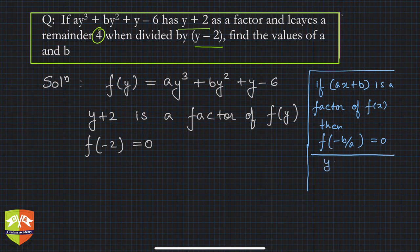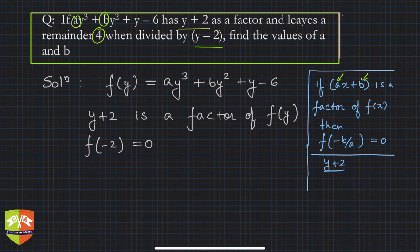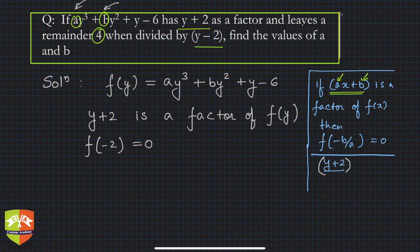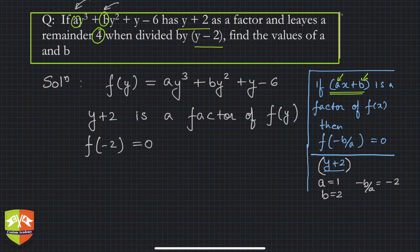Now, don't get confused — the a and b in the general factor theorem statement are different from the a and b we need to find in this question. In our case, the factor is (y + 2), so the coefficient of the variable is 1 and the constant is 2, giving −b/a = −2. Hence f(−2) = 0.